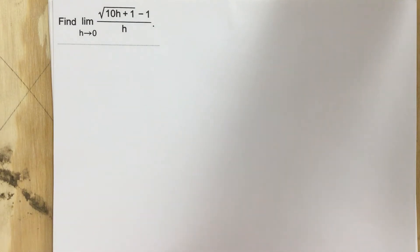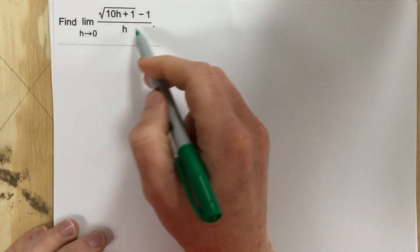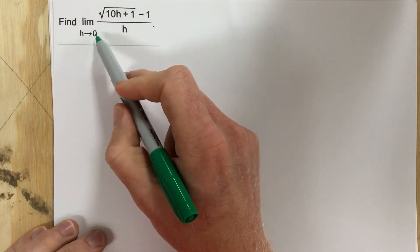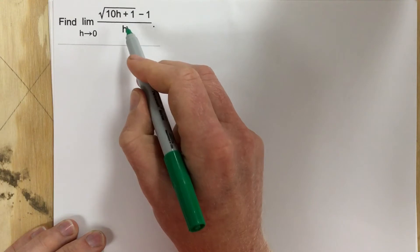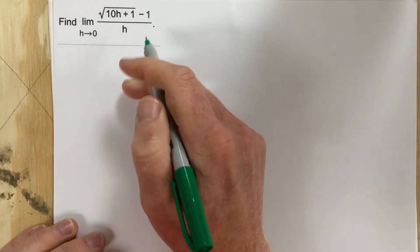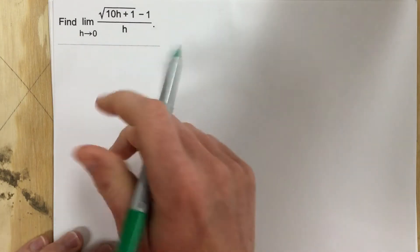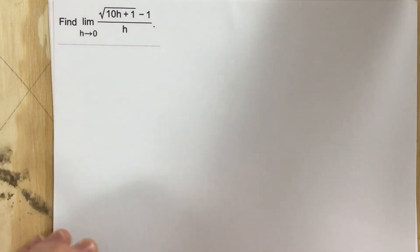Now, we're going to check to see is this function defined at h equals 0. When I plug 0 in here, I can see right away that I am going to be dividing by 0, so 0 is not defined here. So this is different than the previous two problems. I cannot just plug in 0 to find the limit.